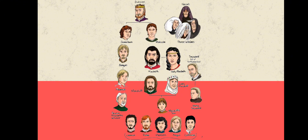Banco's son is Fleance. There is a character, Sivad, Earl of Northumberland and his son named Young Sivad. Seaton, an officer attending on Macbeth. There is a boy, son to Macduff. The other characters are an English doctor, a Scotch doctor, a soldier, a porter, an old man, Lady Macbeth, a Gentlewoman attending on Lady Macbeth, Hecate, Three Witches and Apparitions. These are the characters in the drama.